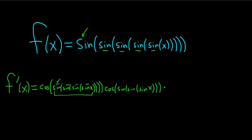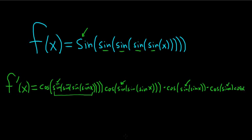Times the derivative of the inside again. So again, the derivative of this one is cosine, and now we only have 2 sines — sine of sine of x. Two parentheses. Times the derivative of the inside again — almost there — cosine of sine of x, times the derivative of the inside, so cosine x. Absolutely ridiculous.